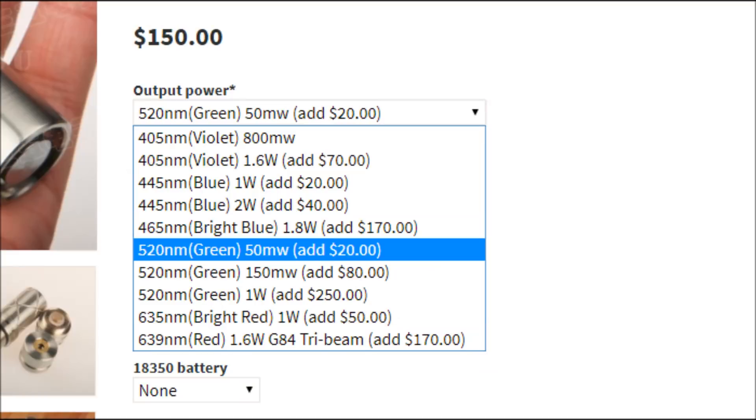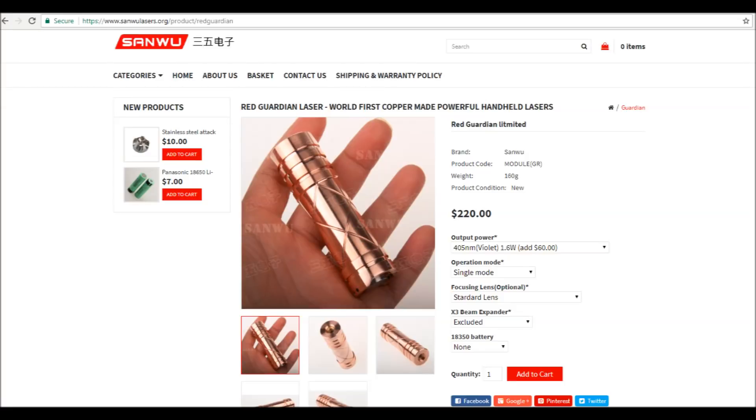I got this one in the smooth stainless steel option, and this one retails for $150. They also have other power options with different colors that go for different amounts of money, and they sell this laser in the red copper hosts, but those only go as low as 150 milliwatts in the 520 color.